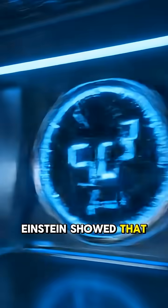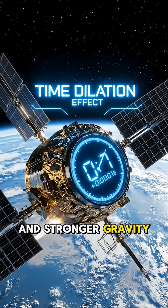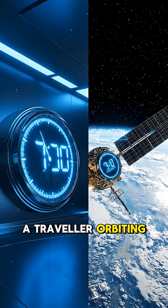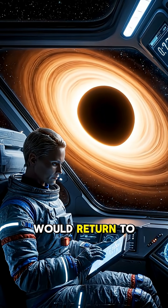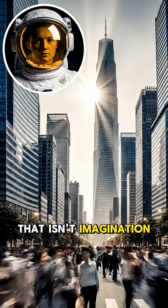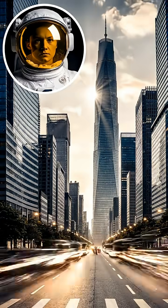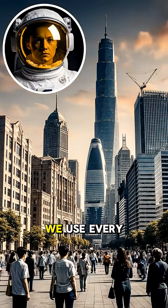Einstein showed that time isn't fixed. It moves slower the closer you get to light speed and stronger gravity. A traveler orbiting near a black hole or moving at relativistic velocity would return to Earth having aged far less than everyone else. That isn't imagination, it's relativity, confirmed by atomic clock experiments and satellite corrections we use every day.